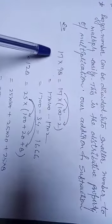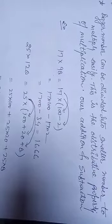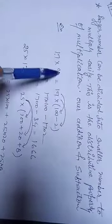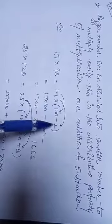For example, 17 into 98. Now 98, 17 as it is, 98 can be retained as 100 minus 2.